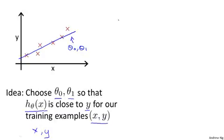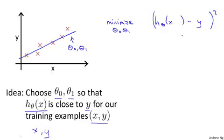Let's formalize this. So in linear regression, what we're going to do is I'm going to want to solve a minimization problem. So I'm going to write minimize over Theta 0, Theta 1, and I wanted this to be small. I want the difference between h of x and y to be small. And one thing I might do is try to minimize the squared difference between the output of my hypothesis and the actual price of the house.